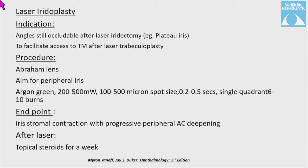Laser iridoplasty is indicated if angles remain occludable after laser iridectomy, or to facilitate access to the trabecular meshwork before laser trabeculoplasty. The Abraham lens is used targeting the peripheral iris with argon green laser. Endpoint is iris stromal contraction with progressive peripheral anterior chamber deepening. Post-laser, topical steroid is used for one week to decrease inflammation. The patient is prepared with pilocarpine drops first to constrict the pupil, and then peripheral iris spots are targeted.